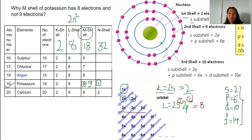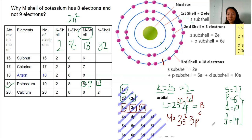Now let us look at the third shell, the M-shell. The M-shell has three sub-shells: 3S, 3P, and 3D. The 3S sub-shell holds two electrons, 3P holds six electrons, and 3D holds ten electrons. So in totality, M-shell holds 2 plus 6 plus 10 equals 18 electrons.